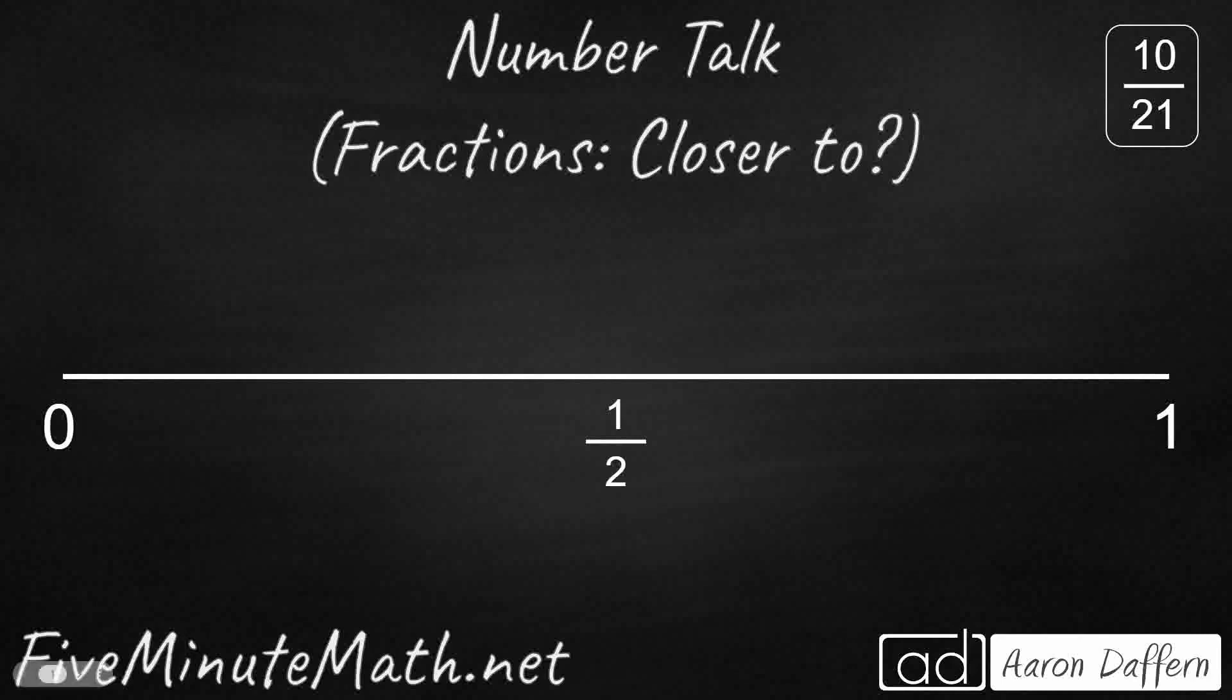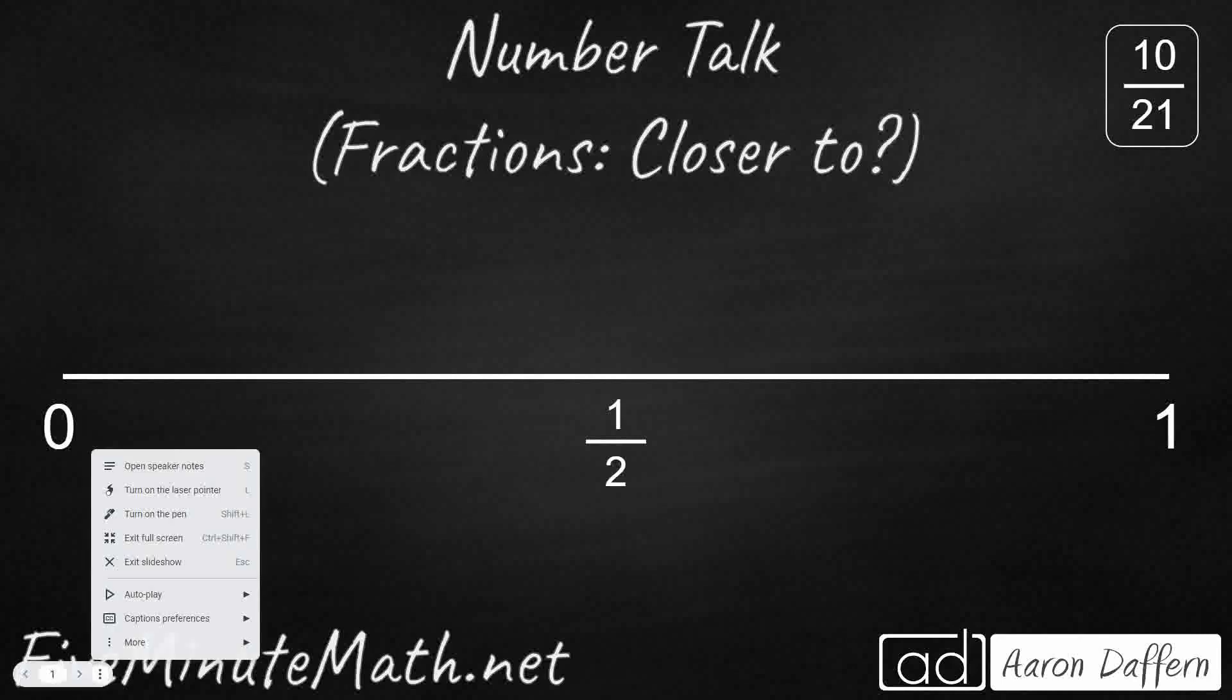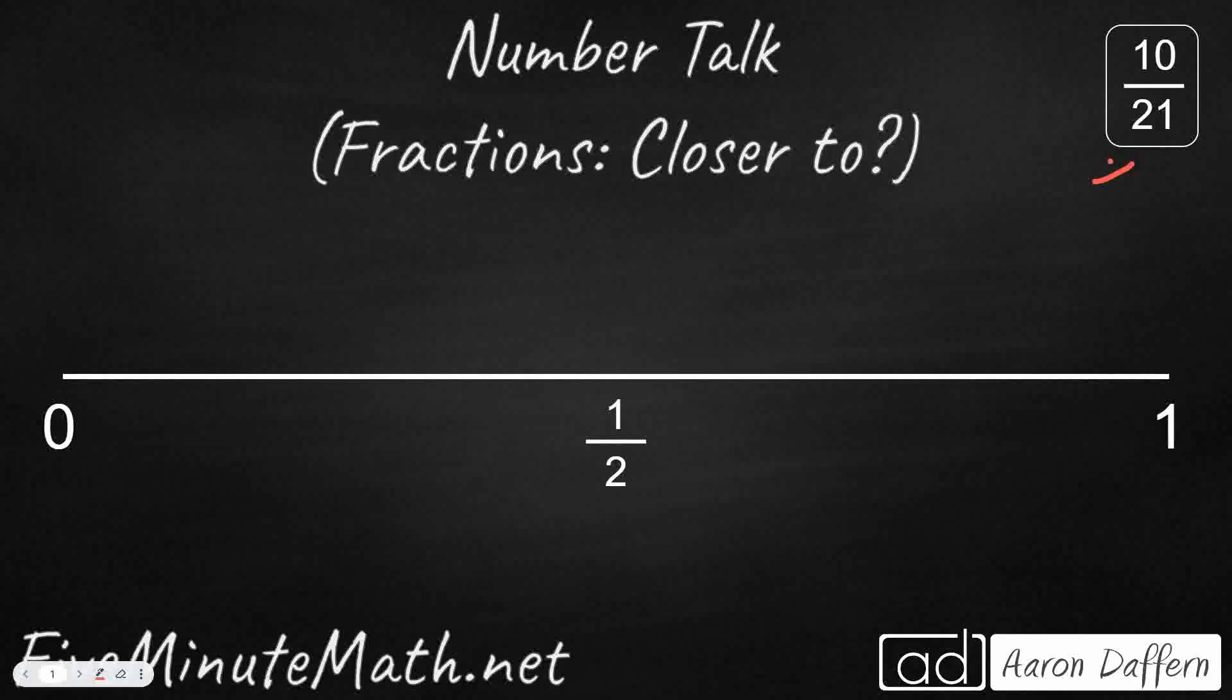One way we can look at this is to take a look at our denominator. So we have a denominator of 21, or 21sts. That's kind of an unusual one, but if we were to rewrite the numbers we see on our number line here, that might make it a little bit easier. So how do we do that?